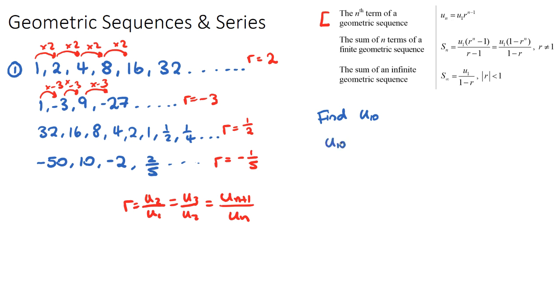by using this formula. u_10 will equal u_1, which is our first term, which in this case will be 1, multiplied by our common ratio, which is 2, to the power of n minus 1. Now our n for this example would be 10, because I want to find the 10th term, so it's going to be to the power of n minus 1. Okay, so u_10 will be 1 times 2 to the 9, which we know will just be 2 to the power of 9, and we can work that out if we have a calculator, or if your multiplication skills are on point.